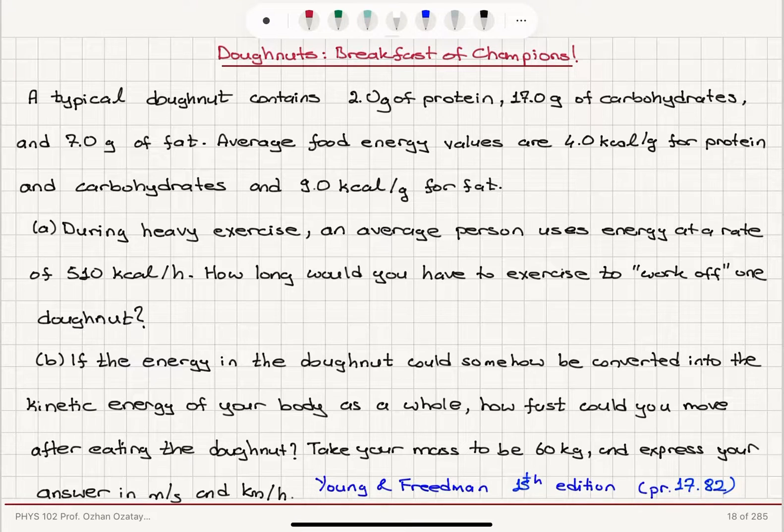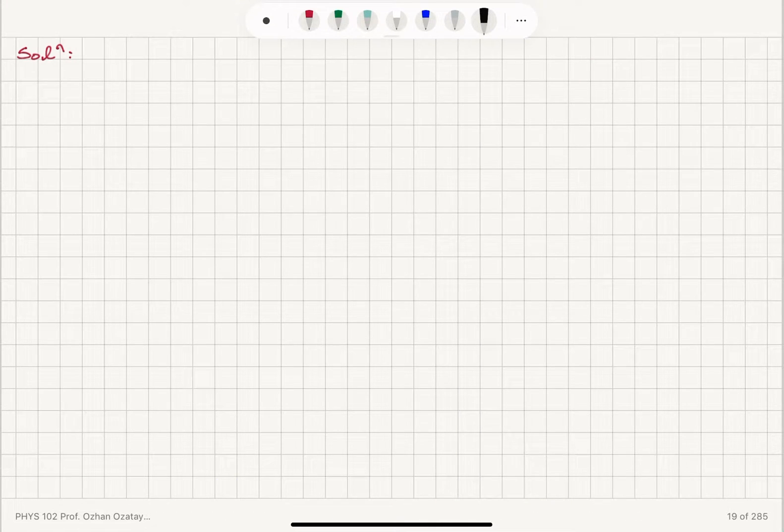So let's find the total amount of energy a donut can provide, Q total. We have 2.0 grams of protein at 4 kilocalories per gram, and 17 grams of carbohydrates at 4 kilocalories per gram, and 7 grams of fat at 9 kilocalories per gram.